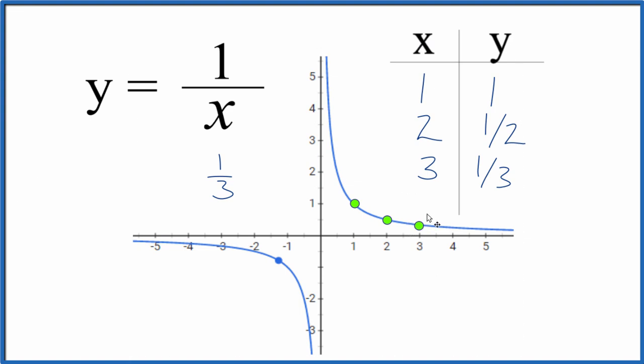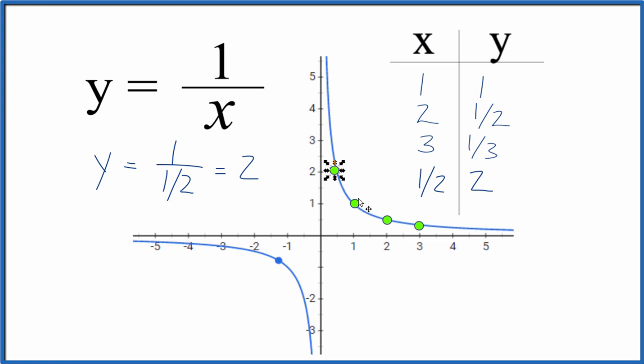And we could also put fractions in. Let's make this a little smaller. So let's put 1 half in for x. So y equals 1 over 1 half. 1 half goes into 1 two times. 2 times 1 half is 1. So we get 2 for our y value. So we go to x is 1 half and 2 for y. And you can see that's on the point. You could keep putting points in, and they would all be on the line here.